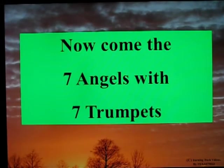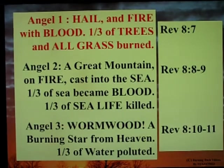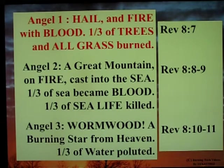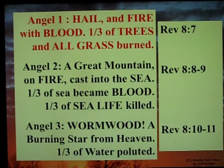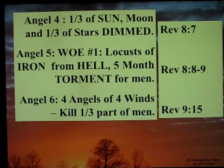Now come the seven angels with seven trumpets. Angel number one: hail and fire with blood — a third of trees and all of the grass are burned. Angel two: a great mountain of fire cast into the sea — one third of the sea becomes blood and one third of sea life is killed. Angel number three: Wormwood, the burning star from heaven, and a third of water is polluted.